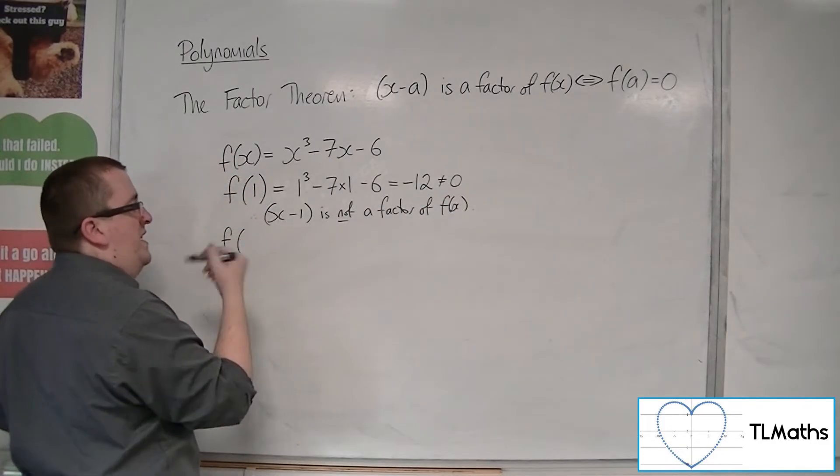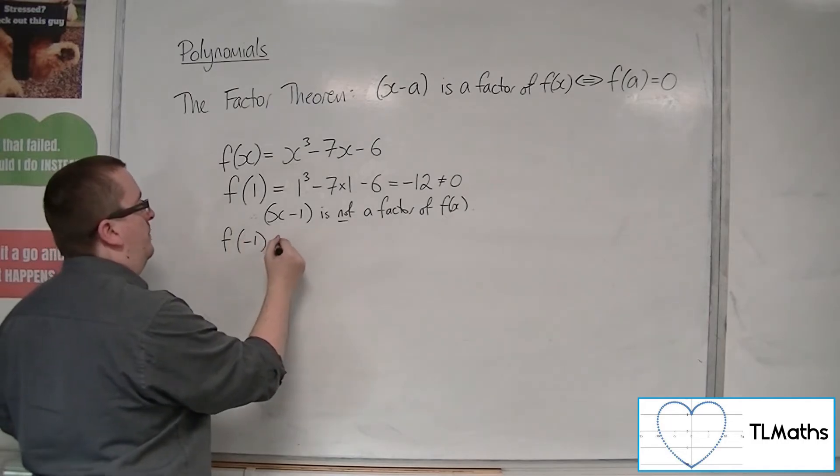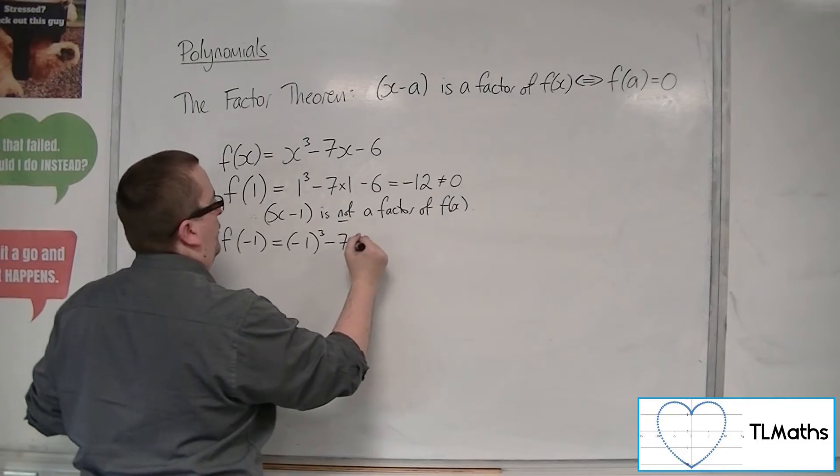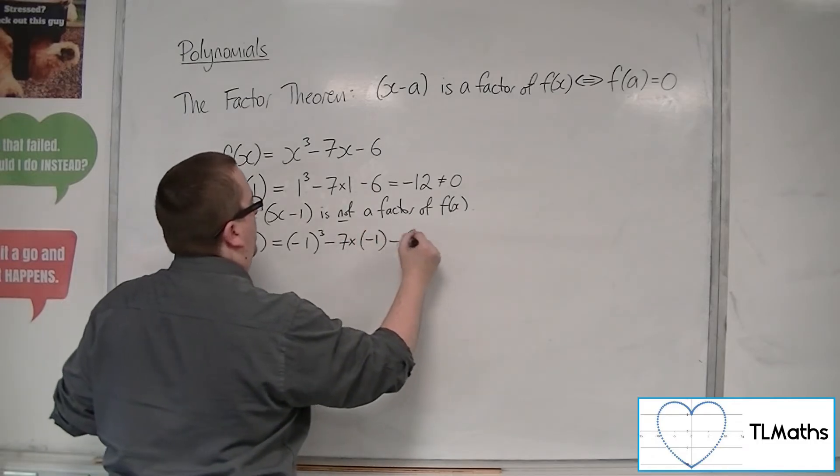So next up, try the next easiest, so minus 1. So minus 1 cubed, take away 7 lots of minus 1, take away 6.